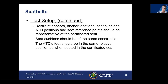To set this up, the restraint anchors, anchor locations, seat cushions, ATD position, and SRP should be representative of the certified seat. You take geometry and design information from your certified seat to set up the rigid seat such that belt angles, attachment locations, and path are very similar. Seat cushions should be of the same construction and the ATD feet should be in the same relative position as in the certified seat — essentially replicating the initial certification test, but with a rigid seat.